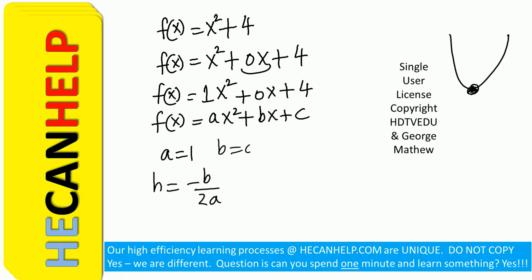a = 1, b = 0, c = 4. So h = -b/2a, which is -0/(2×1). b is 0, and 0 divided by anything is 0, so h = 0. Substitute x = 0: f(0) = 0² + 4 = 4. So h = 0 and k = 4.